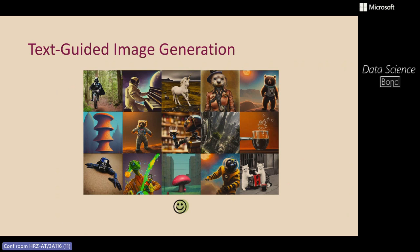Let's give some motivation as to what Attend and Excite does. All these images were generated by a text-to-image model called Stable Diffusion. Stable Diffusion takes any input text and generates really high quality and diverse images. The model is very expressive — you can see a teddy bear who is an astronaut walking in space, Darth Vader riding a bike in the forest, or a lizard doing experiments in a lab. These models are really, really impressive.